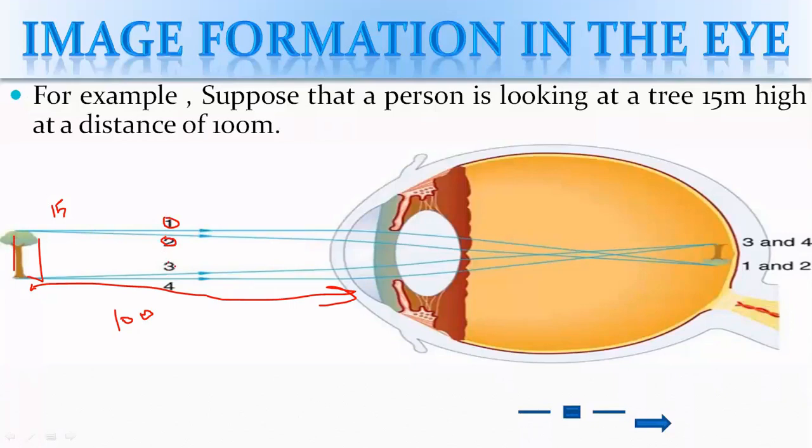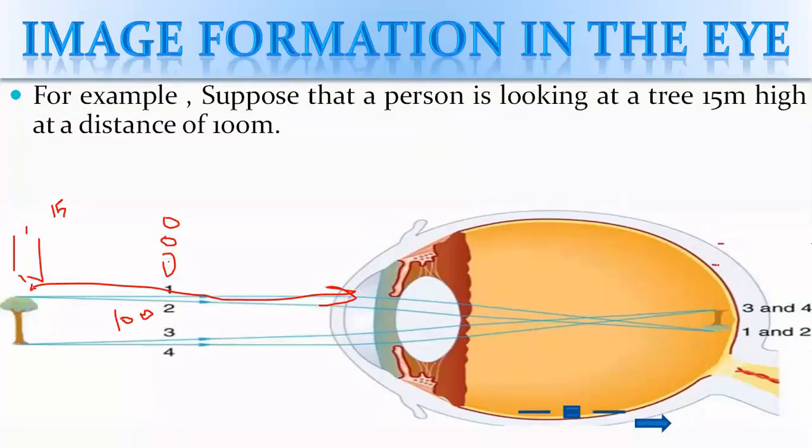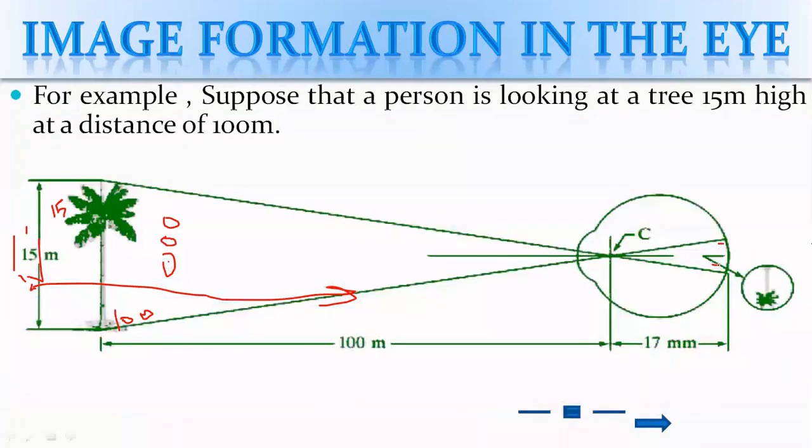For example, suppose that a person is looking at a tree 15 meters high at a distance of 100 meters. This is the first part, this is the second part of this particular object. This is the bottom, this is the top, but when it comes to the image, the orientation is inverted.